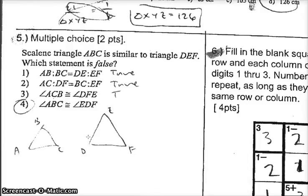Question number 5. Notice how there is no picture, so you should just draw one. Scalene triangle ABC is similar to triangle DEF. So order is important. ABC, DEF. Which statement is false? So when I do a question, I'm going to look for all of them that are true, and one of them is false. Notice how when I do a problem, I actually go through every single choice.